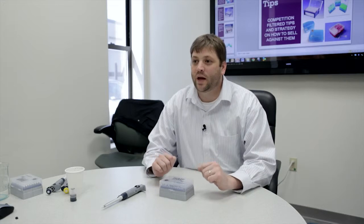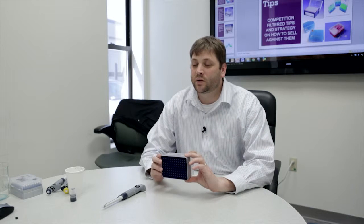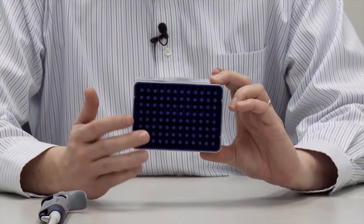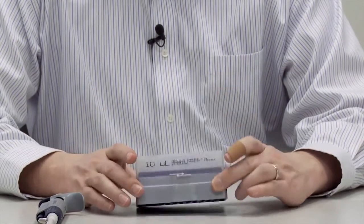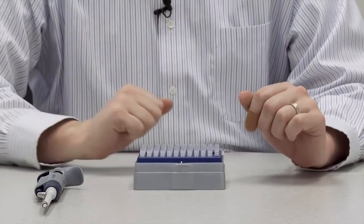First of all, you'll notice our base on our box is wider than it is at the top, built like a column, so it is sturdy. It does not flip. The next thing is we individually compartmentalize all of our tips. No cross contaminations. If the lid is open, you're not gonna have to worry about anything getting into your box.